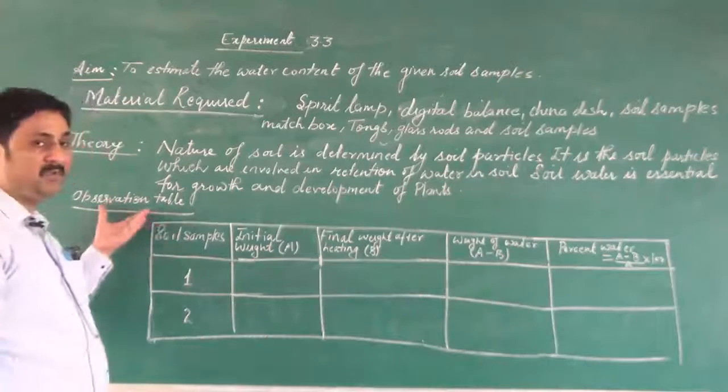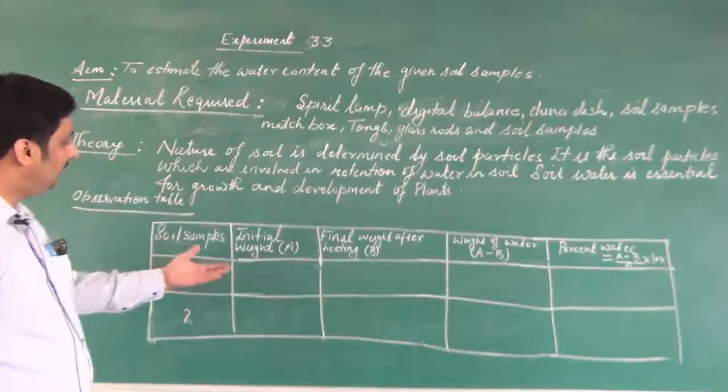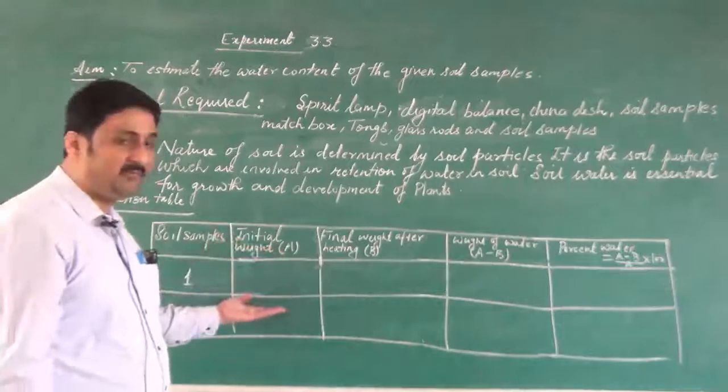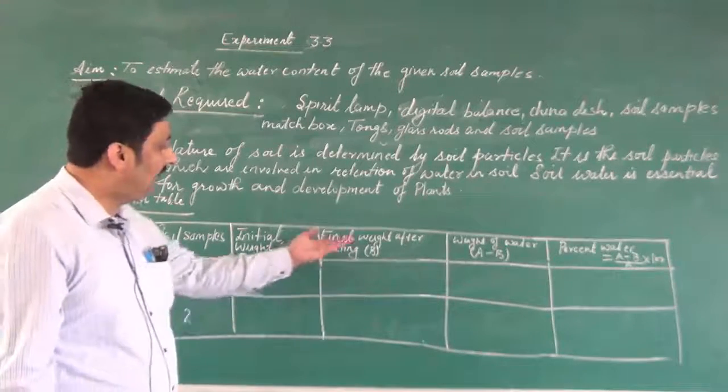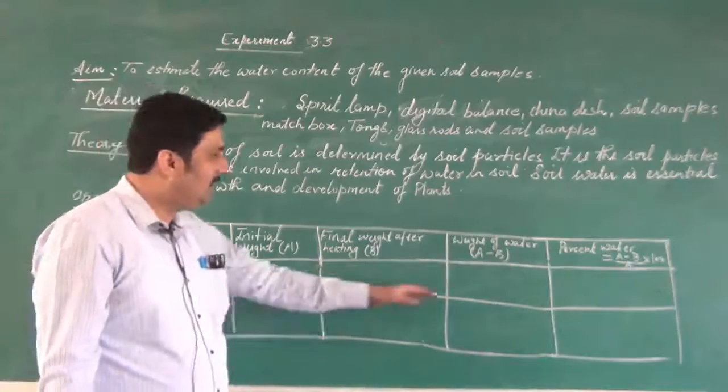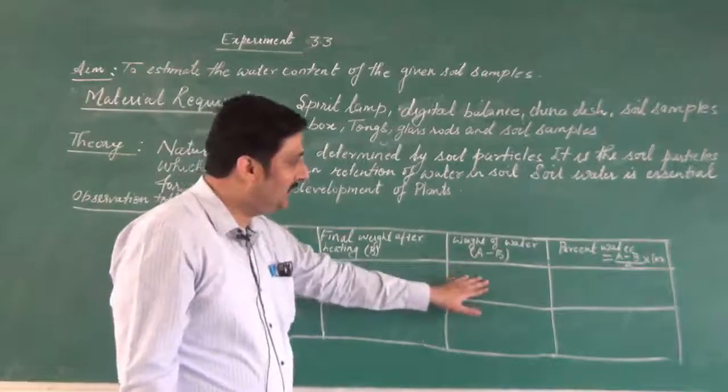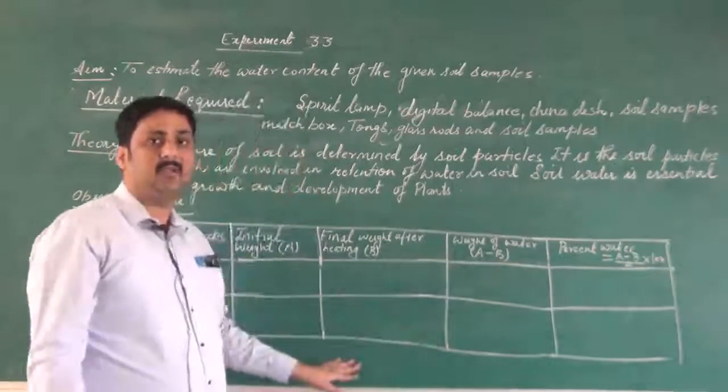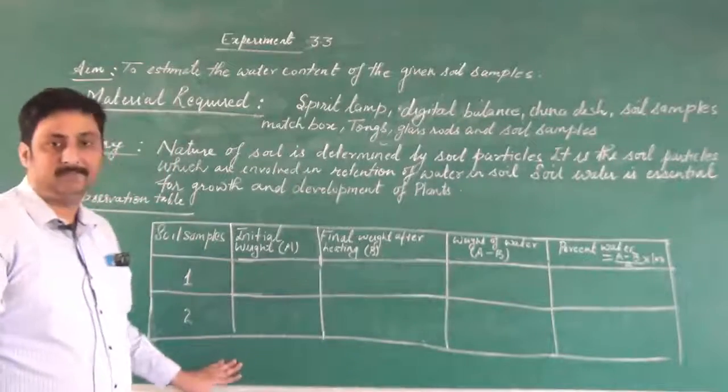Now let us talk about the observation table. You can see initial weight of the soil, then final weight of the soil after heating, weight of water A minus B, and percent of water which we have to calculate.